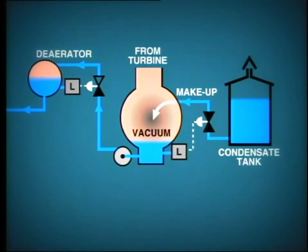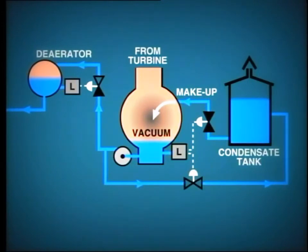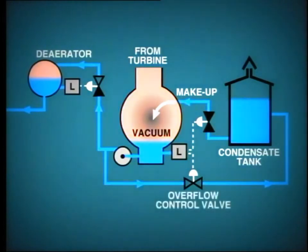If the hot well level continues to rise, we must find some means of dumping this excess condensate back to the condensate tank. This is achieved by fitting a connection from the condensate system through a control valve back to the condensate tank. This is known as the overflow control valve, and its opening is determined by high water level in the condenser hot well.